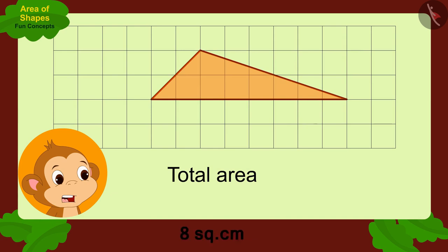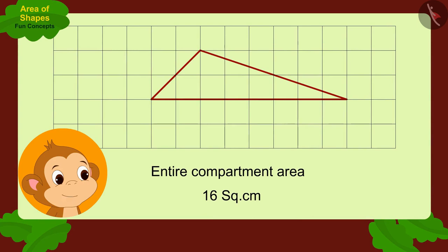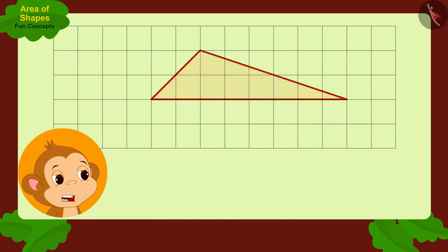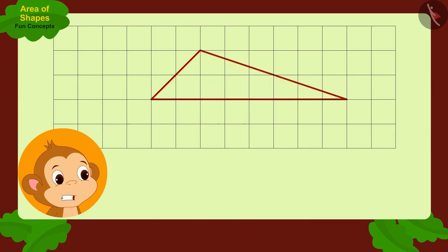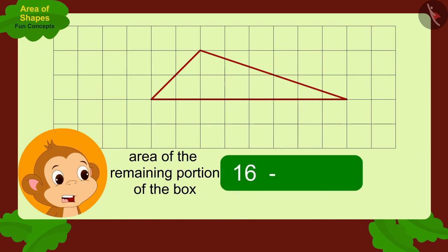In this way, the total area of this part of the box is six plus two — eight square centimeters. The area of the entire box is 16 square centimeters, and the area of this part of the box is 8 square centimeters. This means the area of the remaining portion of the box is 16 minus 8 — eight square centimeters.